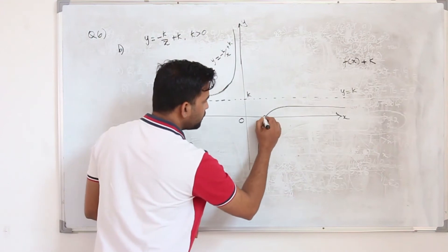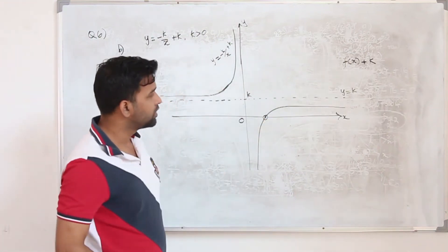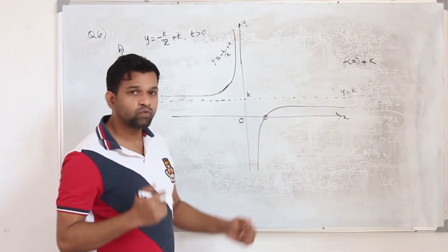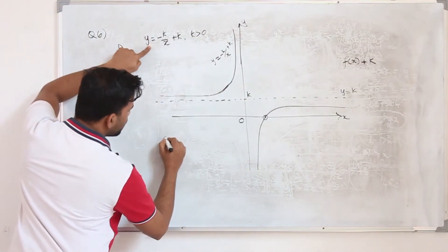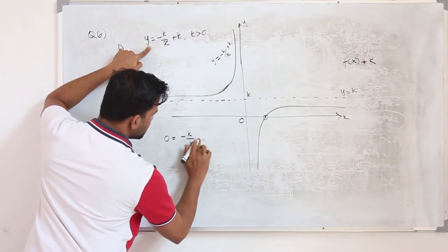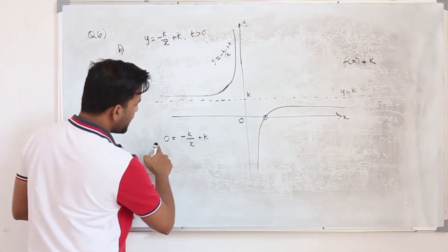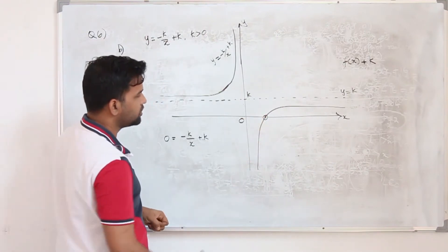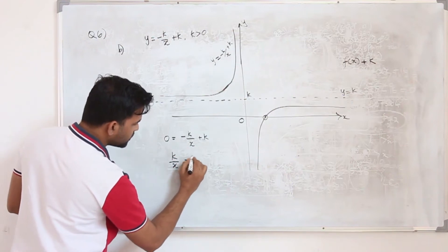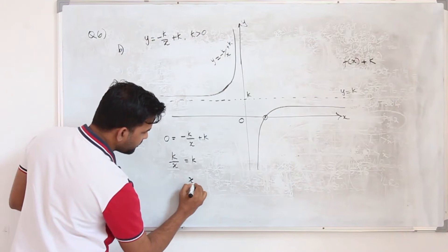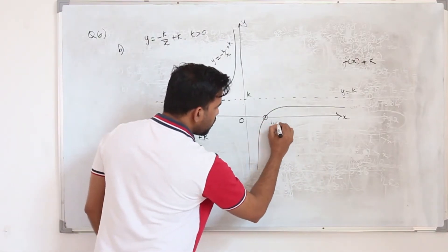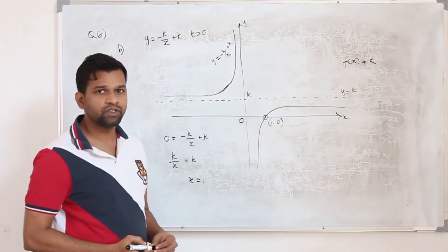To find the point of intersection with the x-axis, replace y by 0 in the function. So when you put y equals 0: minus k upon x plus k equals 0, which gives k upon x equals k, so x equals 1. The point of intersection with the x-axis is (1, 0).